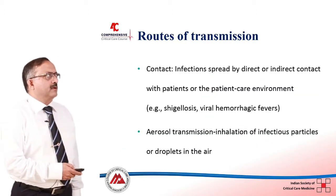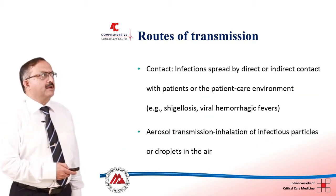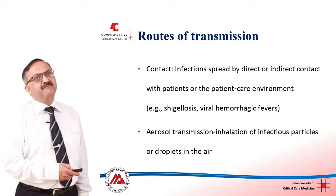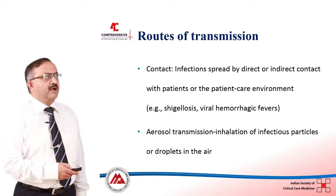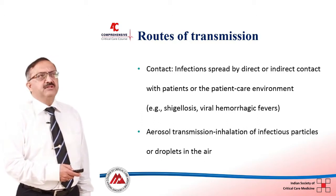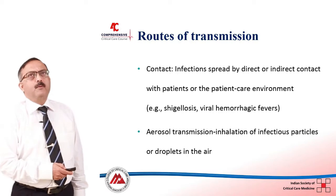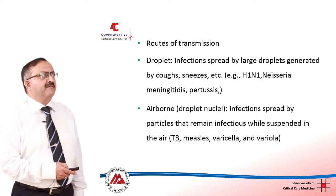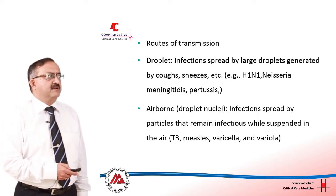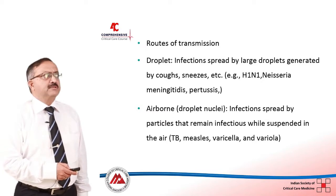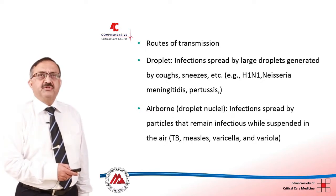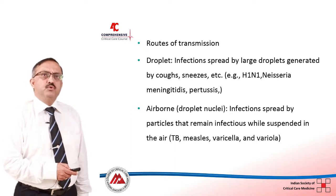Routes of transmission: contact transmission is by direct or indirect contact with patients or the patient care environment, and examples include shigellosis and viral hemorrhagic fever. Aerosol transmission is inhalation of infectious particles or droplets in the air. Droplet infection occurs via large droplets generated by coughing and sneezing — H1N1, Neisseria meningitidis, and pertussis are clear examples, where particles are large and do not travel more than 1 meter from the patient.